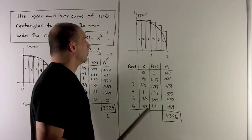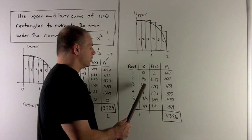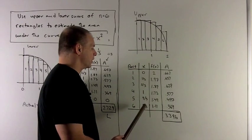So in this case, the left end points are going to be 0, 1 third, 2 thirds, 1, 4 thirds, and 5 thirds.